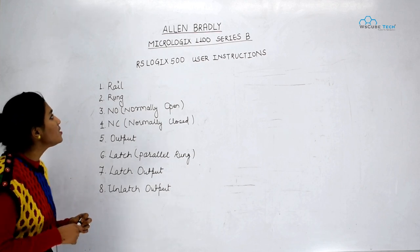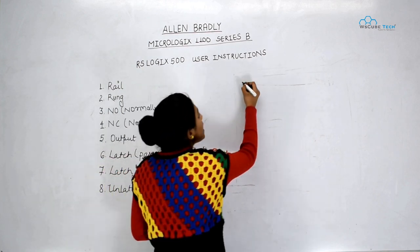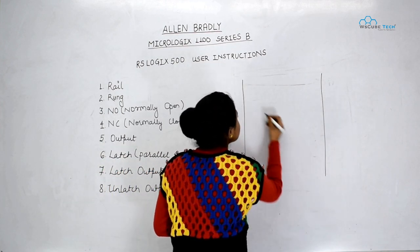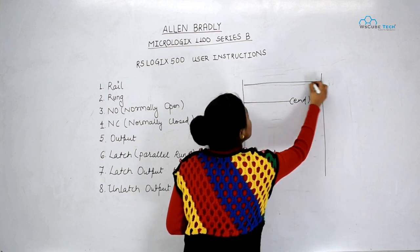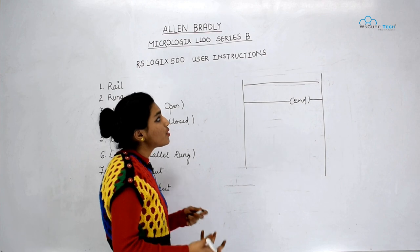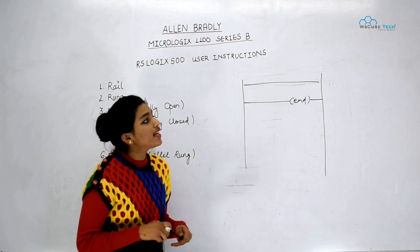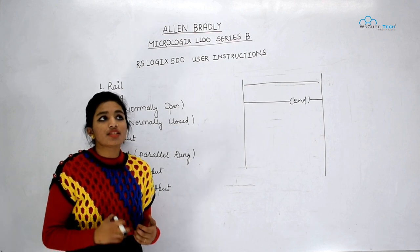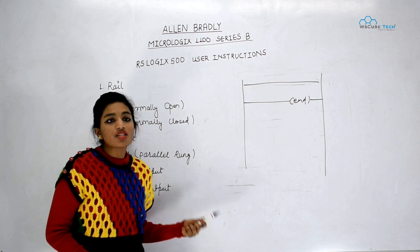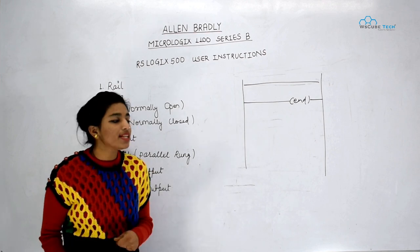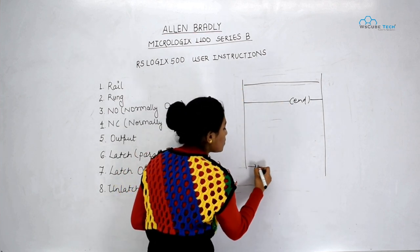The first user instruction is RAIL. In ladder logic, our ladder logic looks somewhat like this, and here we have got lots of horizontal lines depending on our ladder programming. Just like in other languages we have C, C++, PHP, we have ladder logic to program our PLC. The two vertical lines in ladder logic are known as RAIL.